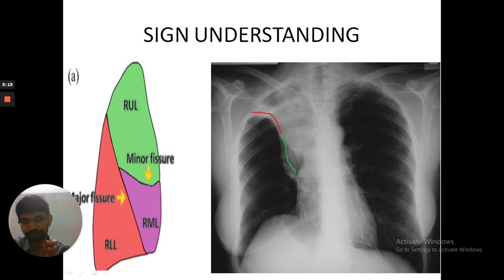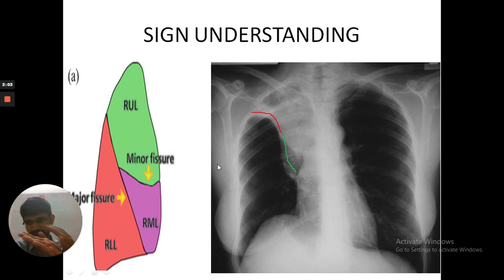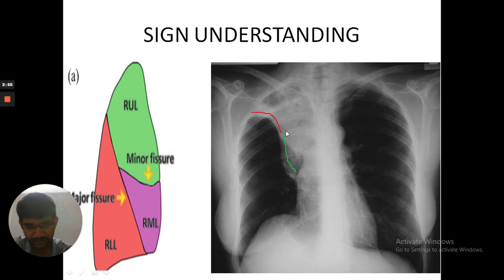When there is a right upper lobe collapse, suppose there is a collapse of the green color part, so the upper portion moves up. When there is a flat line and the right upper lobe collapses, it goes up, forming the Golden's S-sign, also known as the reverse S-sign because it is a reversed S shape, not a straight S.